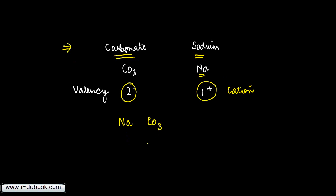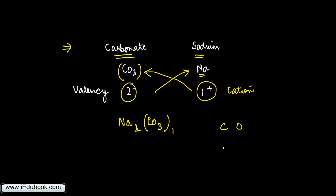Now we do the crossovers. For sodium, I get a valency of two from carbonate, so I write Na₂. For carbonate, I get a valency of one from sodium, so I write CO₃ with a subscript of one. Note that this subscript of one applies to the entire CO₃ group, not separately to C and O. So the formula simply becomes Na₂CO₃ — sodium carbonate.